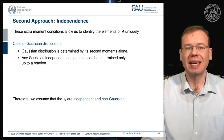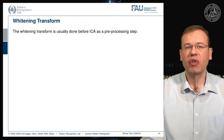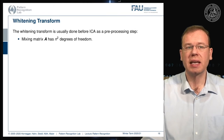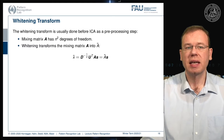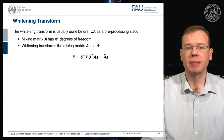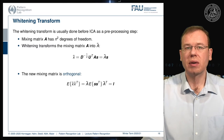Therefore we assume that the si are independent and non-Gaussian, because if they are Gaussian, independent component analysis simply will not work. The whitening transform is typically a pre-processing step. The mixing matrix A has n² degrees of freedom, but after whitening we only need to consider the transformed feature space x-tilde, and the new mixing matrix A-tilde combines the whitening transform and mixing together.